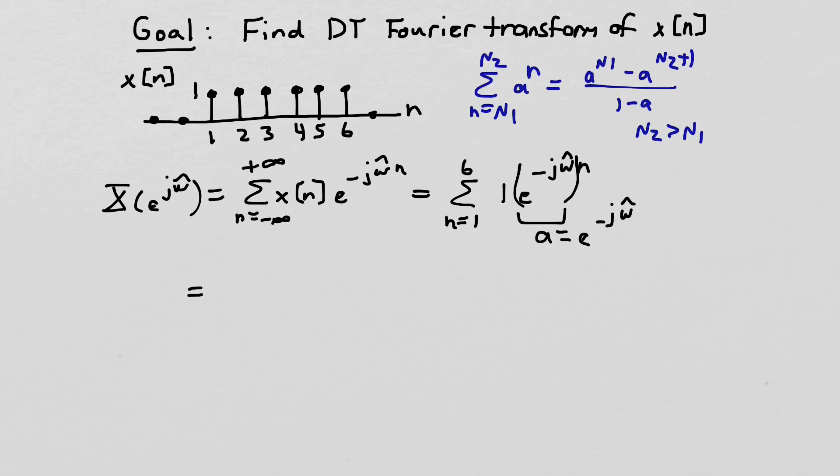So it will be e^(-jω̂) raised to the, well, what's the lower index? The lower index is 1, so that's raised to the 1, minus e^(-jω̂) raised to the upper index, which is 6 plus 1, all over 1 minus a, which in this case is e^(-jω̂).